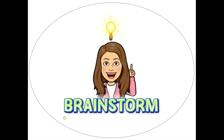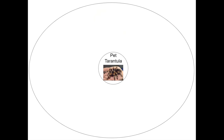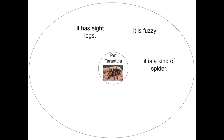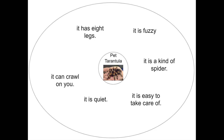First we have to brainstorm — we have to think about it like our steps. I'm going to use my circle map to brainstorm. Some things we brainstormed about why we might want a pet tarantula: I would like a pet tarantula because it has eight legs; because it is fuzzy; because it is a kind of spider; because it is easy to take care of; because it is quiet; because it can crawl on you; or because it is small. Those were some great reasonings why a pet tarantula would make a good pet.